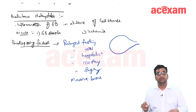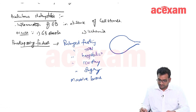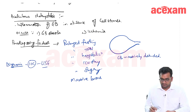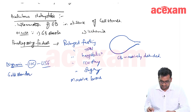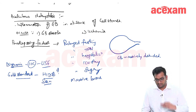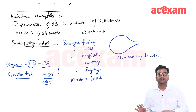The gallbladder is massively distended but there is no stone. For diagnosis, the investigation of choice is ultrasound, and the gold standard is the HIDA scan. The diagnostic criteria for cholecystitis on HIDA scan is absence of visualization of the gallbladder.